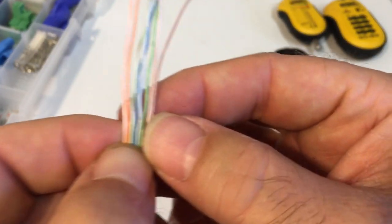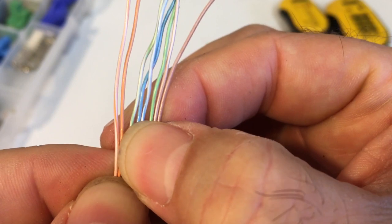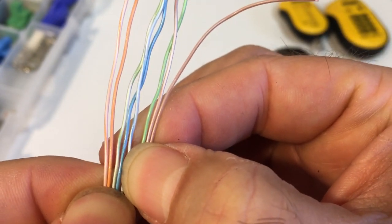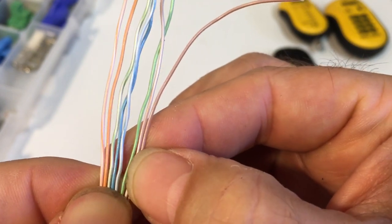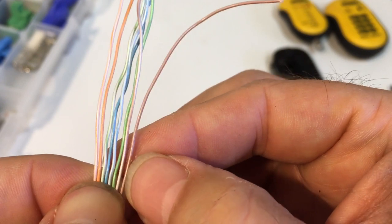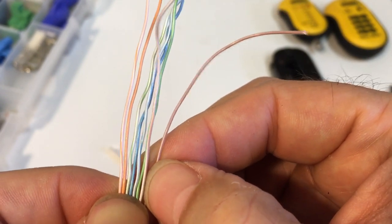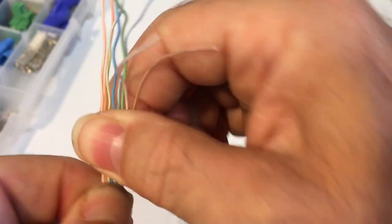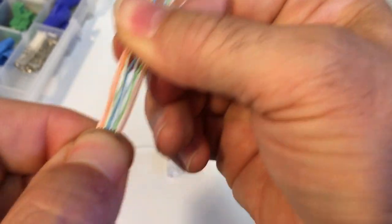Alright, so let's just recheck. I've got white-orange, and then orange, white-green, and then solid blue, white-blue, then I've got solid green, I've got white-brown, and then I've got solid brown. Alright, and like I said, as I was doing this, I'm kind of taking my fingers and pulling them like this, because it helps flatten them out.